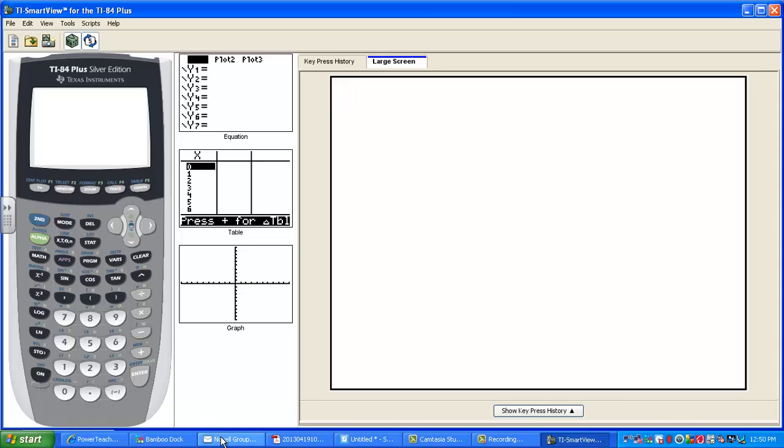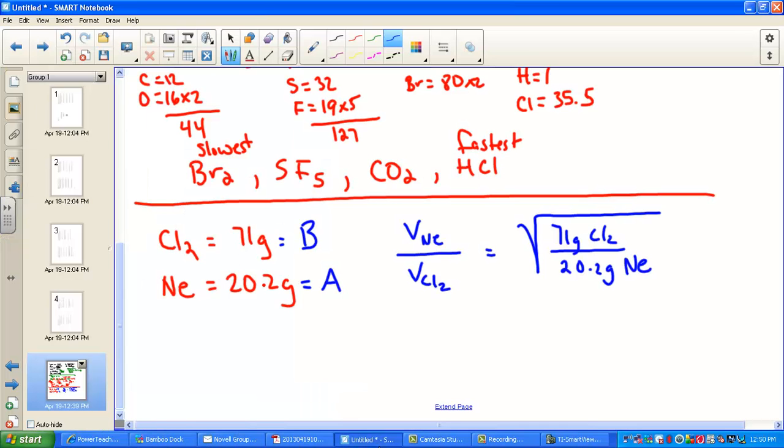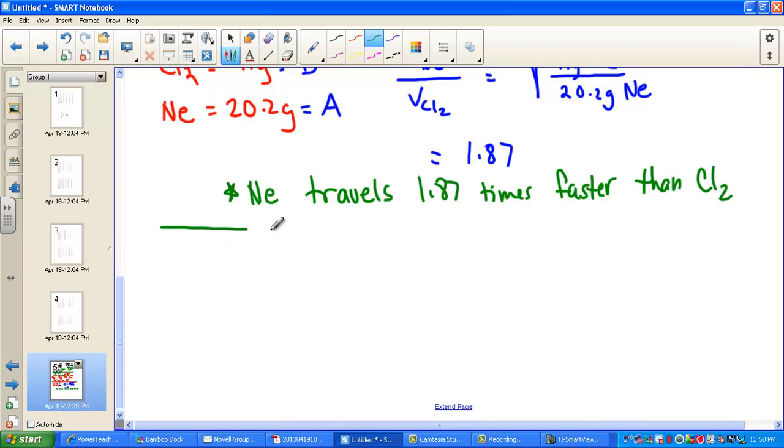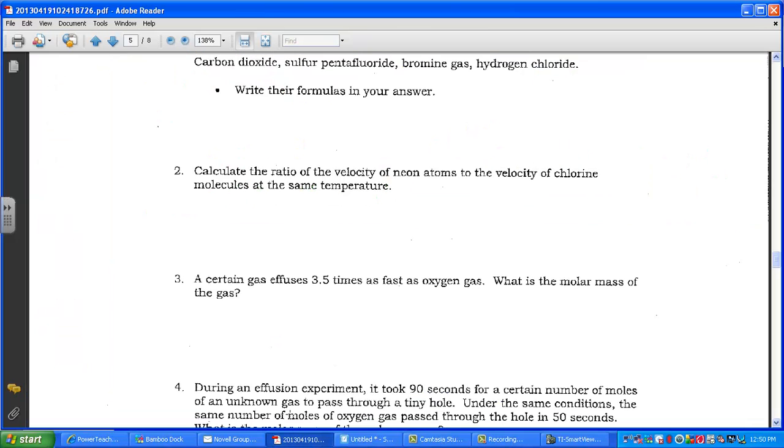And how about something like 1.87. So 1.87, the ratio of velocity of the lighter gas to the heavier gas. I want to know what that number means. So part of your answer, part of full credit grade, will say Neon travels 1.87 times faster than chlorine. This is your A plus answer. I demand a sentence so that I know you know what the question is asking.